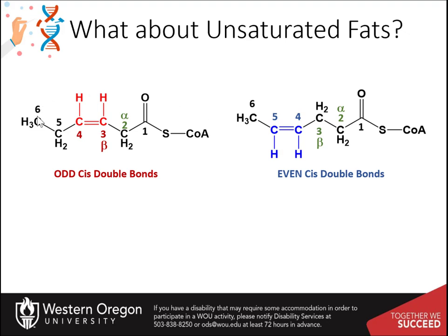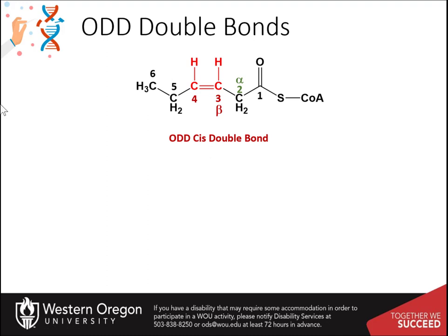Let's take a look at the odd situation first. You just need one additional enzyme to deal with an unsaturated fatty acid with the double bond in the odd position. As the fatty acid undergoes beta oxidation, the double bond will move closer to the thioester end of the molecule until it is positioned between carbons three and four.